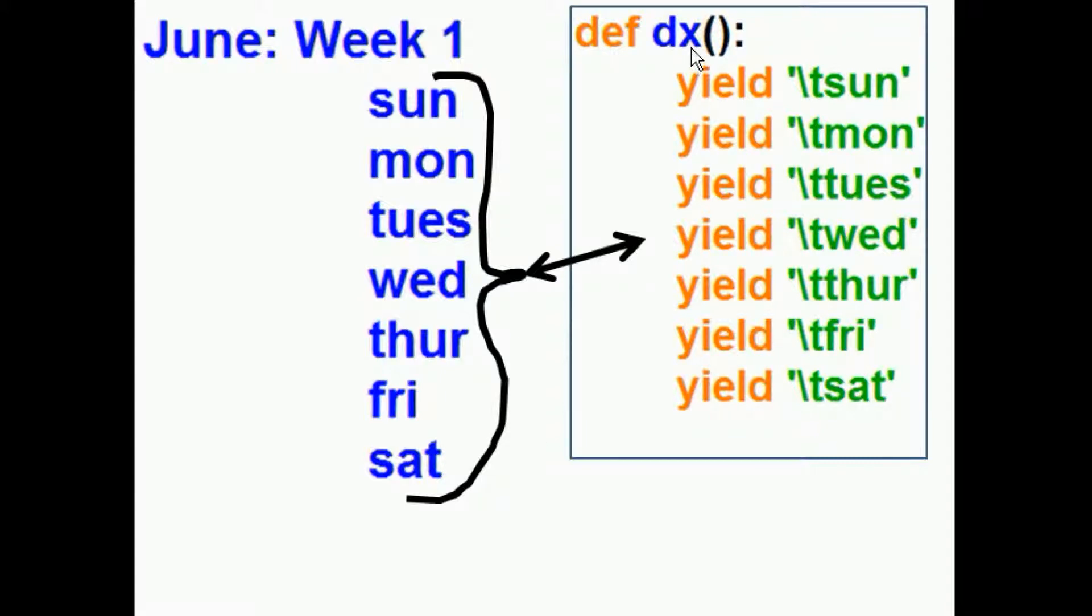So I made a generator function for the days of the week. I called it DX. I defined it. All it says is yield, slash T, a tab, and the day of the week. Sunday, Monday, Tuesday, Wednesday, Thursday, Friday, Saturday.